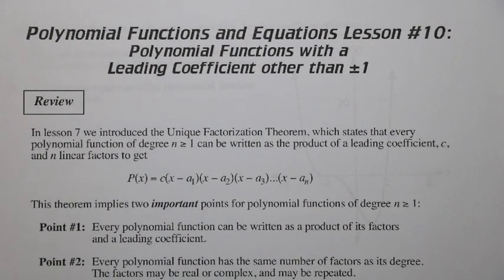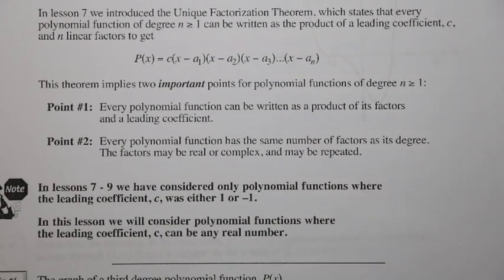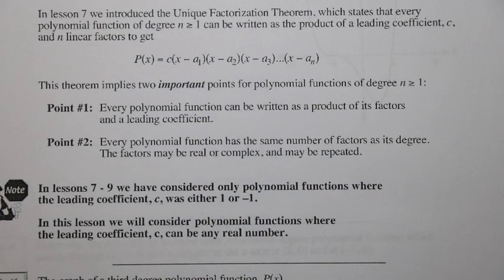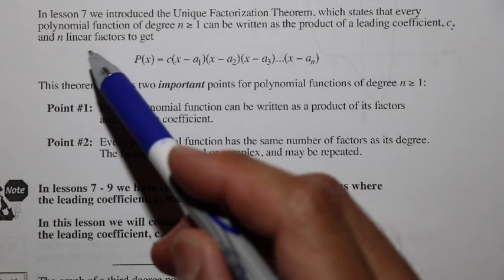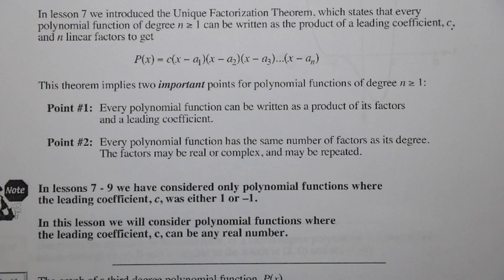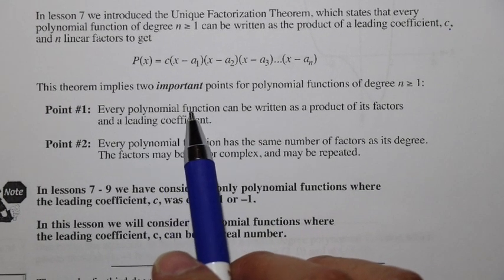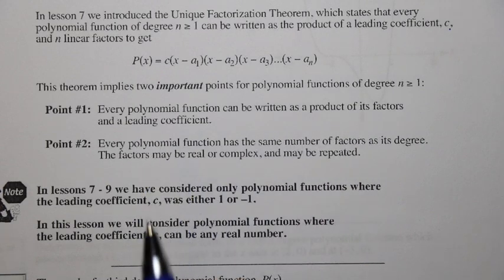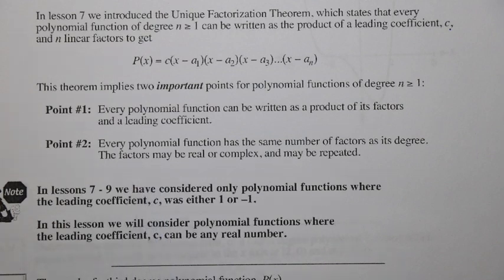We are talking about polynomial functions and equations, lesson number 10, dealing with polynomial functions with a leading coefficient other than positive 1 or negative 1. In a previous lesson, we introduced the unique factorization theorem: every polynomial of degree n ≥ 1 can be written as a product of a leading coefficient c and n linear factors. This implies two points — every polynomial can be written as a product of its factors and c, and every polynomial has the same number of factors as its degree. These factors can be real, complex, or repeated.